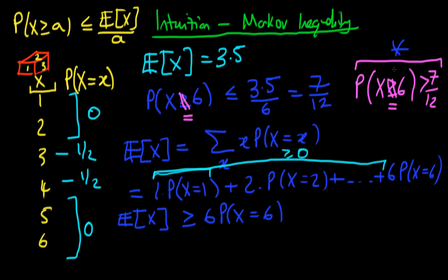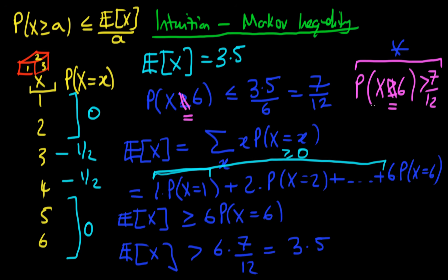We assumed that the probability that X equals 6 is greater than 7 over 12. So we know that the expected value of X has to be greater than 6 times 7 over 12, which is just equal to 3.5. By assuming that the probability that X equals 6 is greater than 7 over 12, we have shown that the expected value of X cannot be 3.5 — we have a contradiction. So if we assume that Markov's inequality isn't true, we get a contradiction: the expected value will be greater than what we assumed.